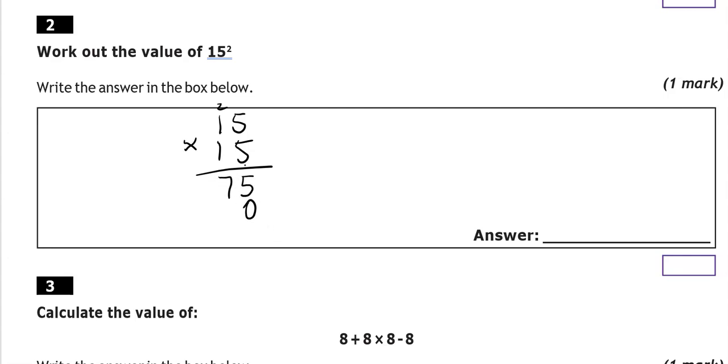Now we go in down and put in a 0. 1 times 5 is 5. 1 times 1 is 1. Adding these together: 5 and 0 is 5, 7 and 5 is 12, 1 and 1 is 2. So 225 is the answer.